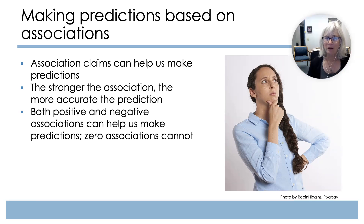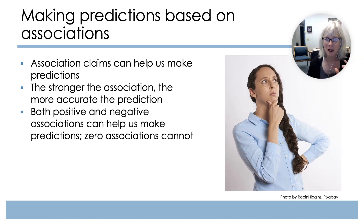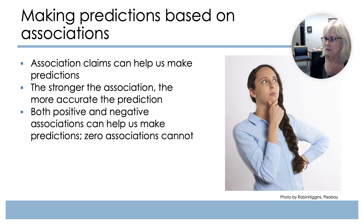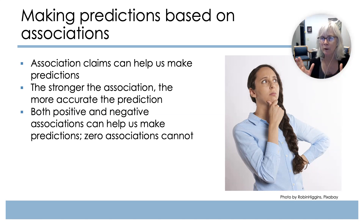If we're thinking about making predictions based on associations, they can be helpful. In general, the stronger the association, the more accurate our prediction. Both positive and negative associations can help us make predictions; zero associations can't. That doesn't mean that there is a causal relationship between these two variables. With that, I'm going to leave you and move to our next video where we'll talk about causal claims.